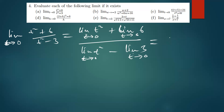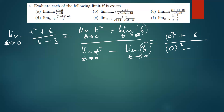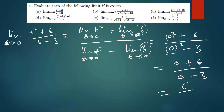Then for the denominator we do the same: the limit of t squared as t approaches zero, minus the limit of three as t approaches zero. Replacing zero for t gives us zero squared plus six over zero squared minus three, which is zero plus six over zero minus three — that's six over negative three, giving us negative two as the solution.